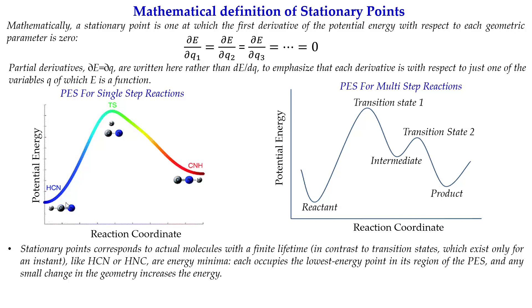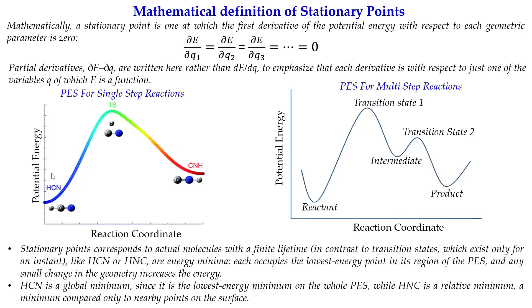Stationary points correspond to actual molecules with finite lifetime, because these are stable species that can exist in real time. In contrast, the transition state exists only for an instant and generally cannot be determined experimentally, except in a few cases using very advanced spectroscopic techniques. HCN and HNC are energy minima; HCN occupies the lowest energy and is the global minimum, while HNC is a local minimum.